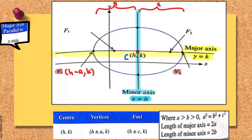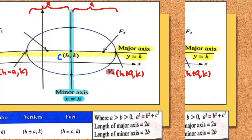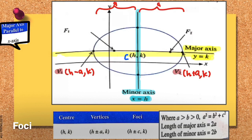For the coordinate of V2, originally the center is at (h, k), but now your x-coordinate moves to the right as much as distance a. Therefore we rewrite the coordinate as (h plus a, k), because you have gone to the right. Your y-coordinate doesn't change — it is still at k. So those are the coordinates for V1 and V2.